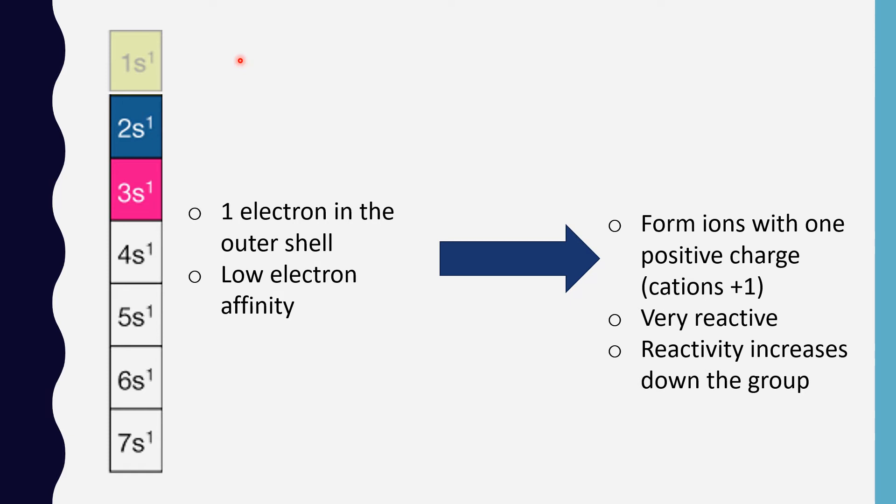Now we can compare the first group and second group. The Group 2 elements are going to be less reactive because you have to lose two electrons from the outer shell, and for each electron they're going to have a different ionization energy. So it's going to require more energy to give off those electrons than for the first group.